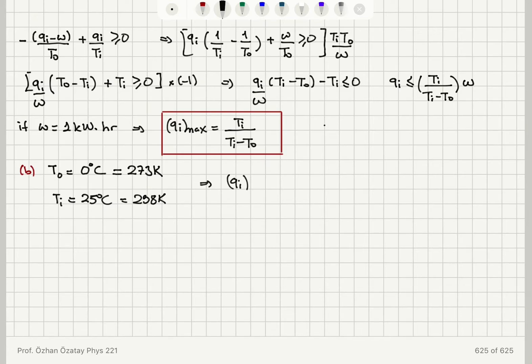Therefore, I find that Q I maximum would be 298 divided by 298 minus 273, which is 298 divided by 25, which is 11.9 kilowatt hours.